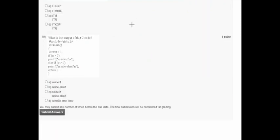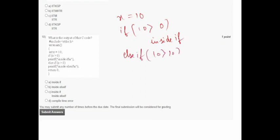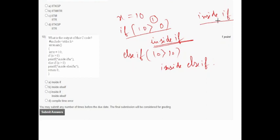In question number 10, x equals 10. If 10 greater than 0 — obviously true, so the value is 1 and this code will execute, printing 'inside if'. In an if and else-if statement, only one condition executes. The compiler checks the first condition, it is true, so 'inside if' is printed. 'Inside else if' will not be printed. Option A is correct.